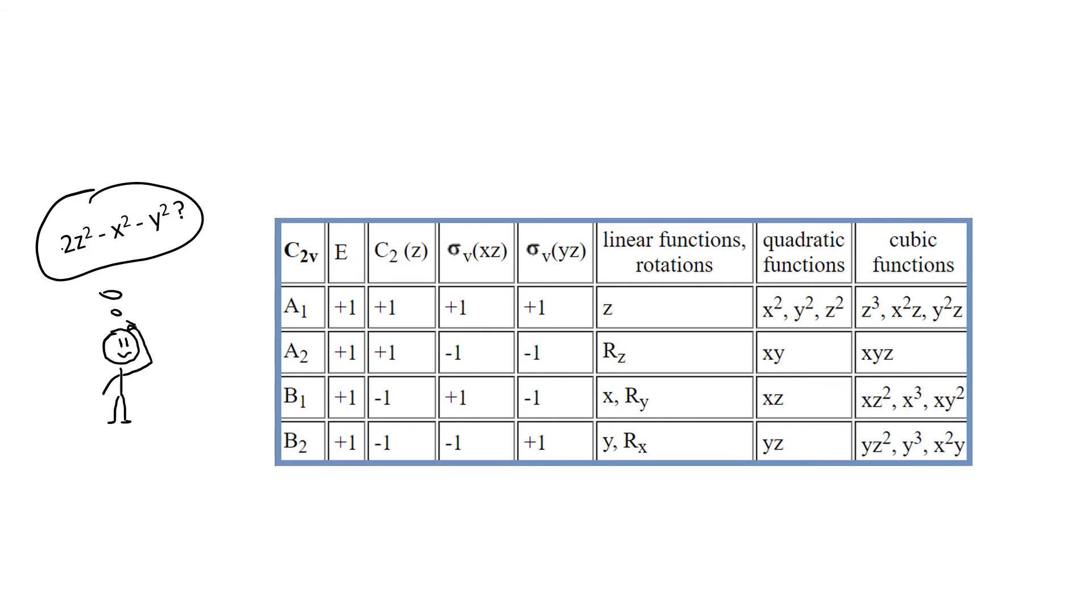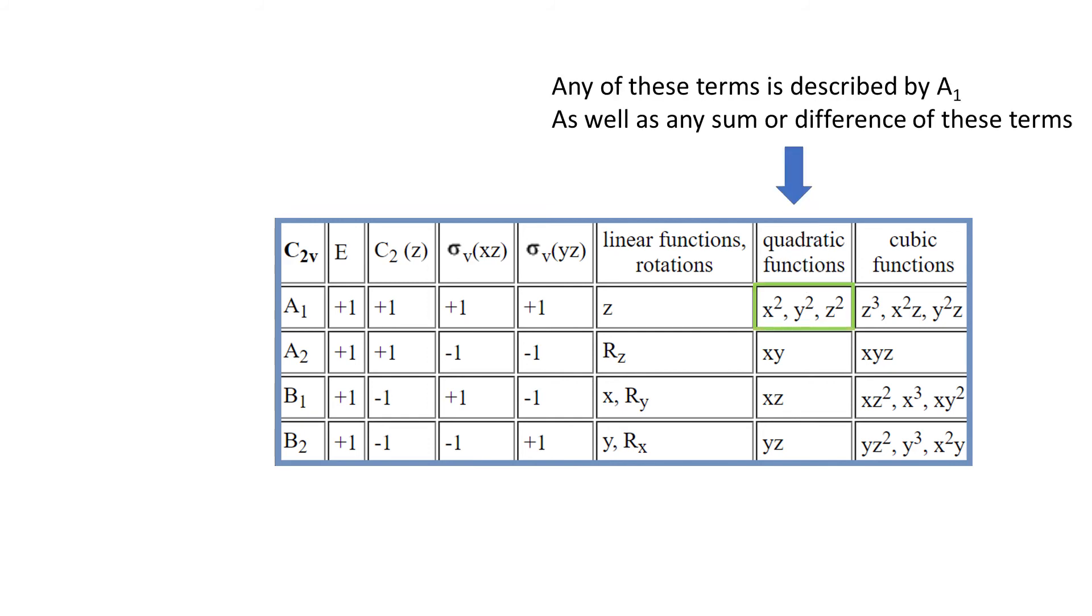So we know how to spot irreducible representations that describe symmetries of d-orbitals like in our H group. But in some groups like C2v, some d-orbitals are seemingly not there. However, we have some terms separated by commas. What it means is that any of these terms can be described by A1 or, in fact, any sum or any difference of these terms.